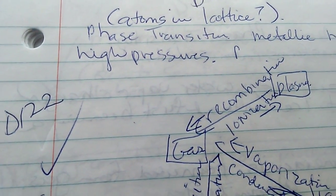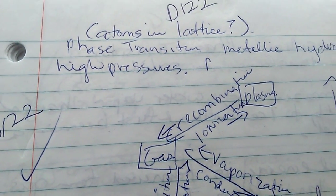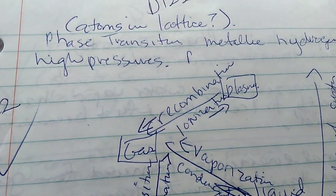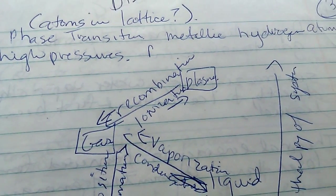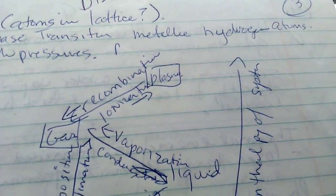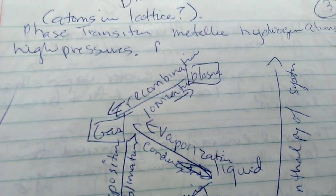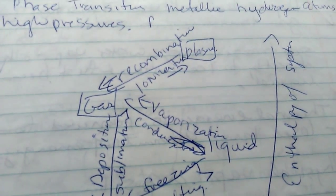Diagram 122 shows the cactians in a super lattice. The phase transition is metallic, hydrogen atoms, and high pressures.